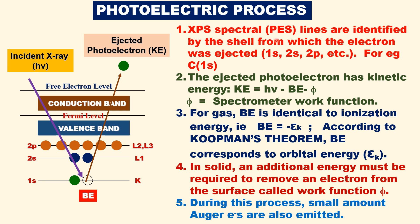XPS spectral lines, or PES lines, are identified by the shell from which the photoelectron is ejected. For example, for carbon, the XPS spectral lines correspond to carbon 1s. The ejected photoelectron has kinetic energy.